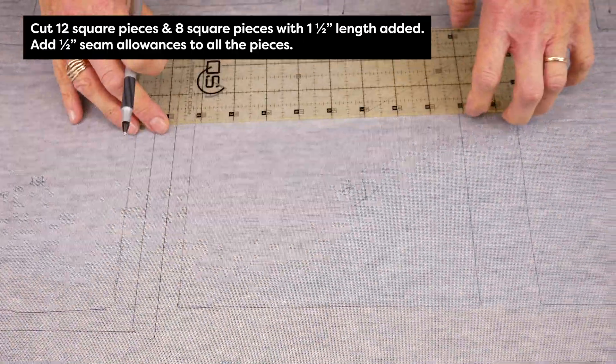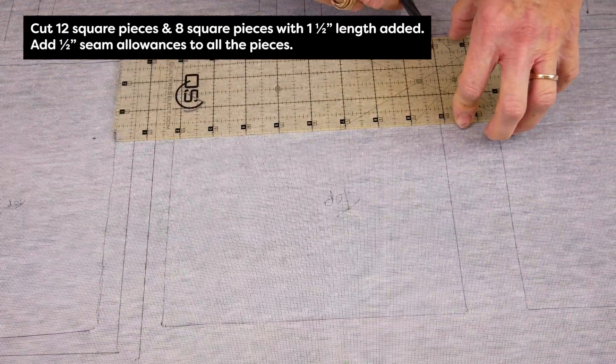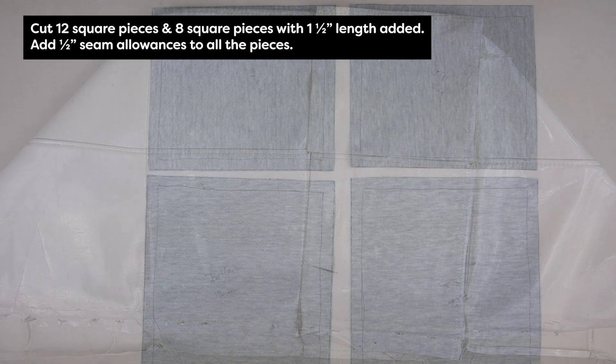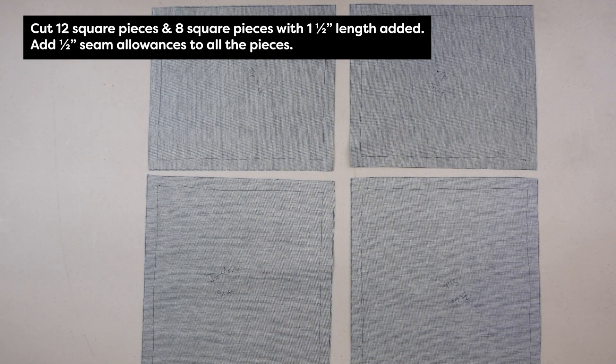Use a clear ruler to add an even half inch seam allowance around all of your squares and one and a half inches along the bottom edge of eight squares. Now we can sew.